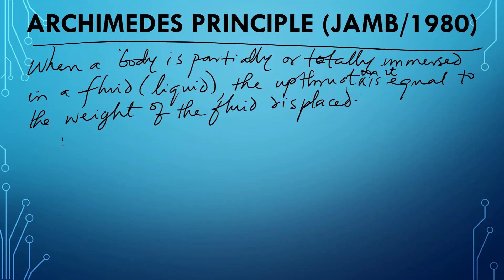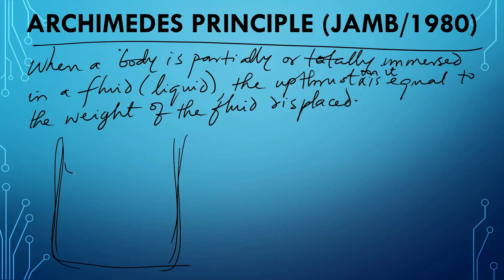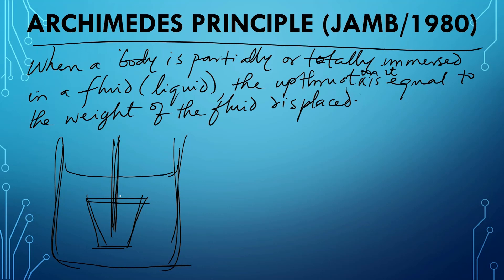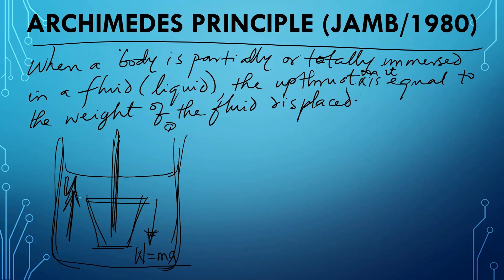Consider a bucket being fetched from a deep well using a rope. Two forces act on the bucket: a downward force which is the weight (mg), and an upward reaction called the up thrust. The tension in the rope acts upward too, so tension plus up thrust equals the weight. That is, the sum of the upward forces equals the sum of the downward forces.